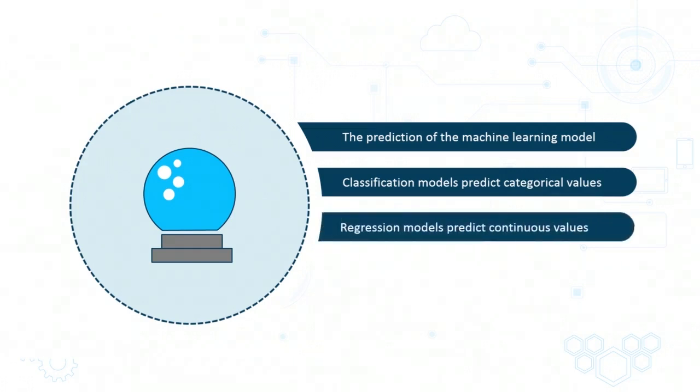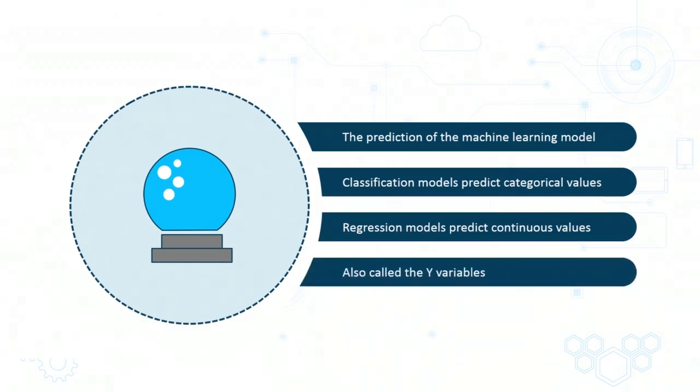This is in contrast to regression models, where the value which needs to be predicted is continuous in nature. For example, a regression model may be used to predict the price of a house or a stock, whose value will fall into a certain range rather than categories. The output of a machine learning model, whether it is a categorical value, which is the case with classification models, or a continuous value in the case of regression models, are referred to as y variables. Labels, on the other hand, are also y variables, but they are specific to classification models.